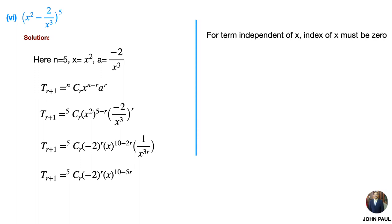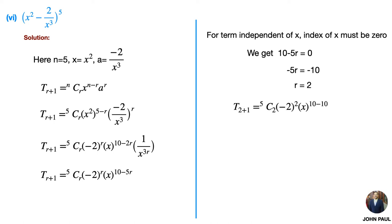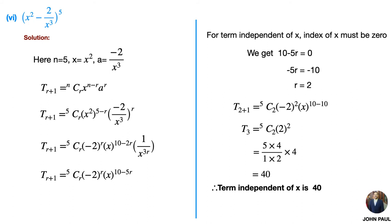For the term independent of x, the index of x must be 0, that is 10 − 5r = 0. By simplifying we get r = 2. Substituting r = 2, we get T3 = 5C2 · 2². By simplification we get T3 = 40. Therefore the term independent of x is 40.